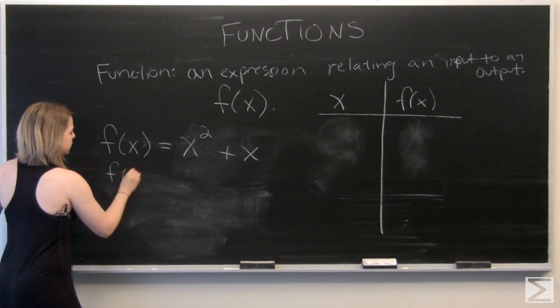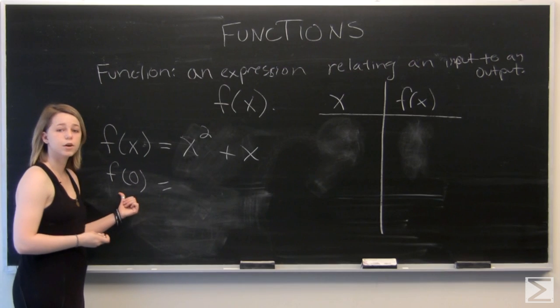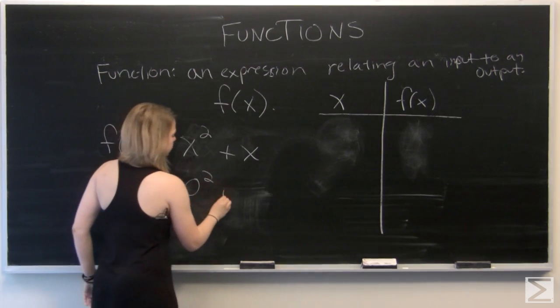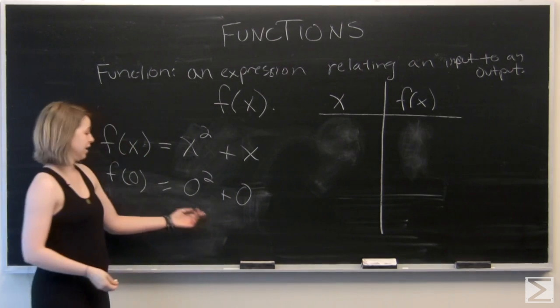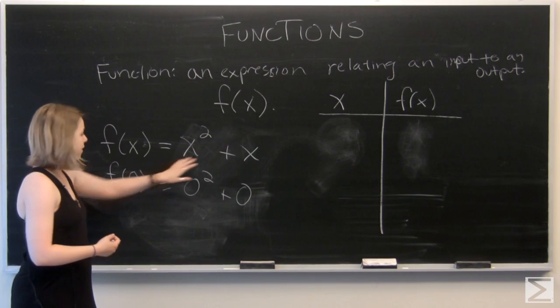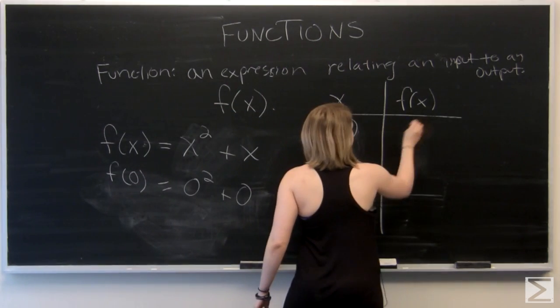So let's try f of 0 to start again. So we plug in 0 where each of our x's are in our equation. And when we have the input of 0, this function gives us an output of 0 as well. So 0 and 0.